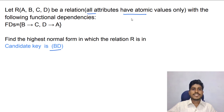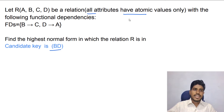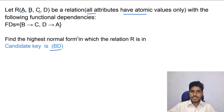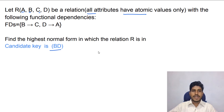If the question does not mention that all attributes have atomic values, but just lists attributes A, B, C, D, we assume that all the attributes are atomic in nature. So this relation is in first normal form.